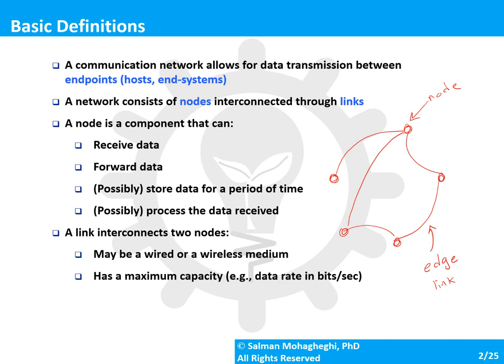Every link can be a wired one or a wireless one, and it has a maximum capacity, which is often indicated in terms of the bit rate — the number of bits per second that can be transmitted throughout that link.